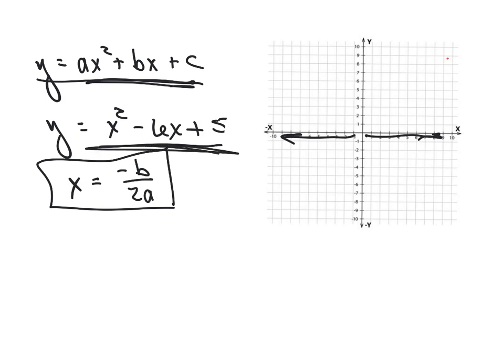If we use this as our equation, my x is going to be negative - and what is my b? My b is negative 6. So negative that negative 6 over 2 times whatever a is. What number does a represent here? 1. So that gives me 6 over 2, which equals 3. So somewhere along this line, the parabola is going to either go this way or this way, somewhere along this line. We're not sure where, but it's going to open up or open down somewhere along there.